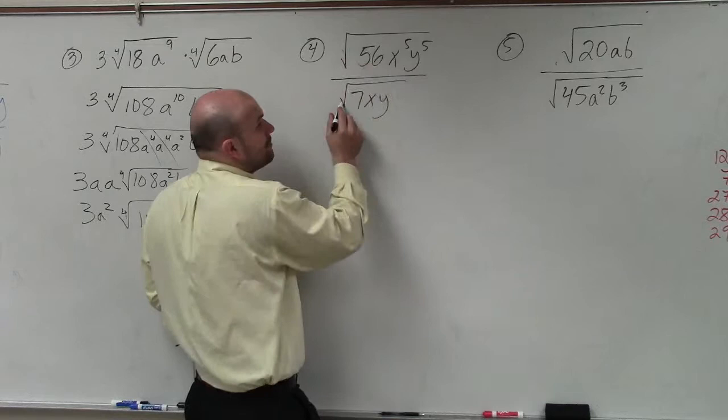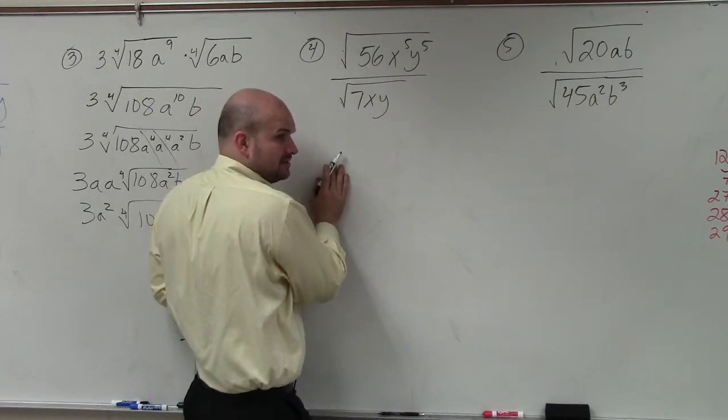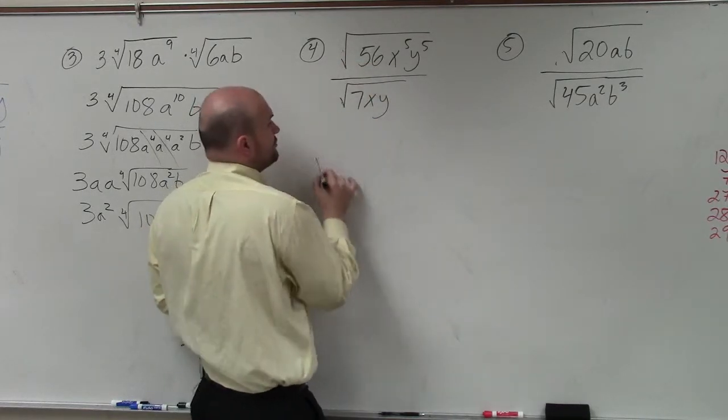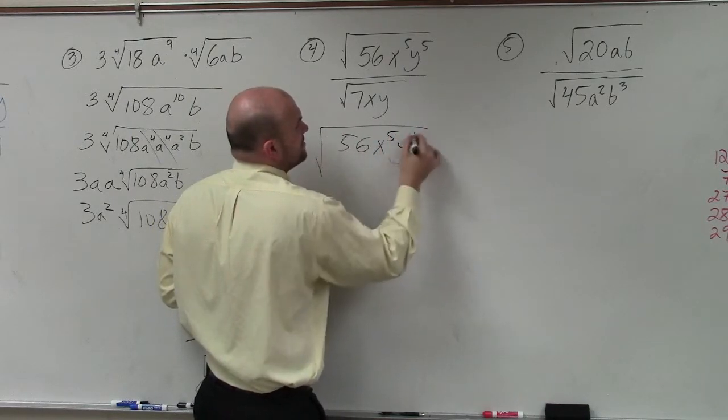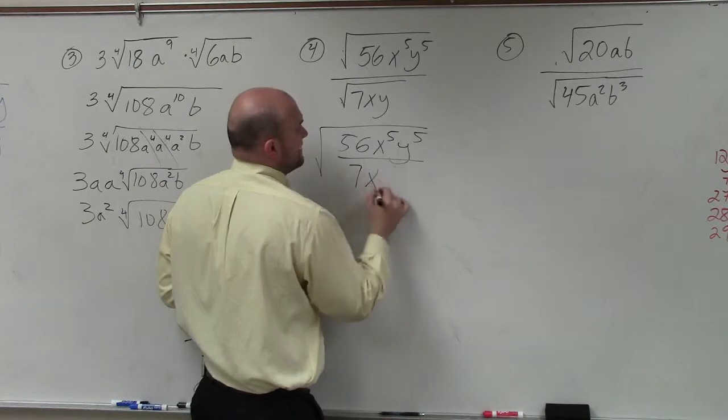So since these are both square roots, the index is the same. Since these are the same, you can rewrite this as 56x to the 5th, y to the 5th, divided by 7xy.